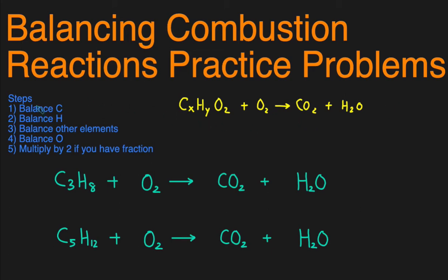The steps for balancing a combustion reaction: first you balance the carbons, next you balance the hydrogens. If you have any other elements besides oxygen — like nitrogen or sulfur — then you balance those elements next, then you balance the oxygens, and lastly if you have a fraction in your reaction then you're going to multiply all the coefficients by two to get rid of the fraction.